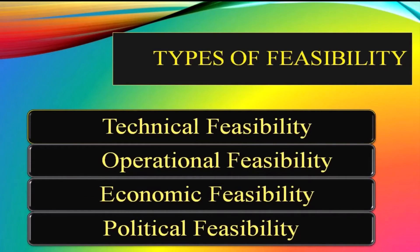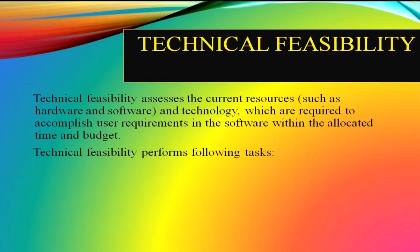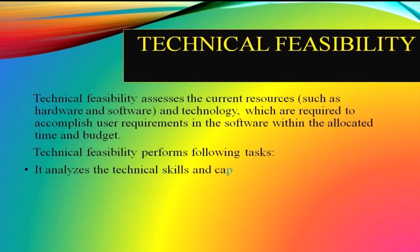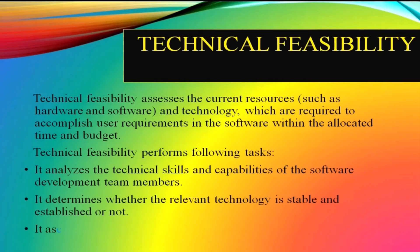There are different types of feasibility: technical feasibility, operational feasibility, economic feasibility, and political feasibility. Technical feasibility assesses the current resources such as hardware, software, and technology which are required to accomplish user requirements within the allocated time and budget. Technical feasibility performs different tasks.